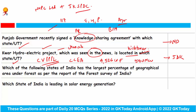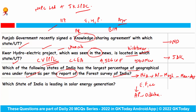Which state of India has the largest percentage of geographical area under forest as per the report of the Forest Survey of India? The answer is Mizoram, followed by Arunachal Pradesh, Meghalaya, Manipur, and Nagaland. The Ministry of Environment, Forest and Climate Change released the State of Forest Report 2021 recently. The highest increase in forest cover has been seen in Andhra Pradesh, then Odisha, and then Maharashtra. States that have not performed well are Manipur, Arunachal Pradesh, Nagaland, and Meghalaya.